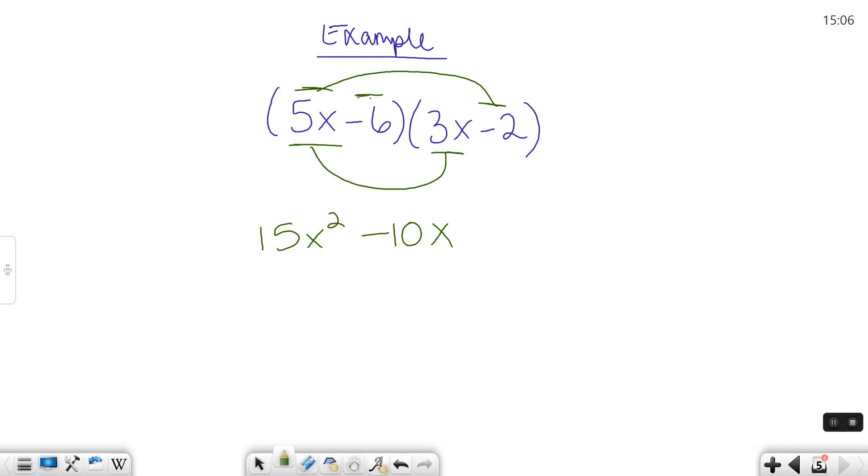The inner terms. Negative 6 times positive 3x. Negative 6 times positive 3 is 18. Negative 18. And attach that x to it. And then your last terms. Negative 6 times negative 2 is positive 12.